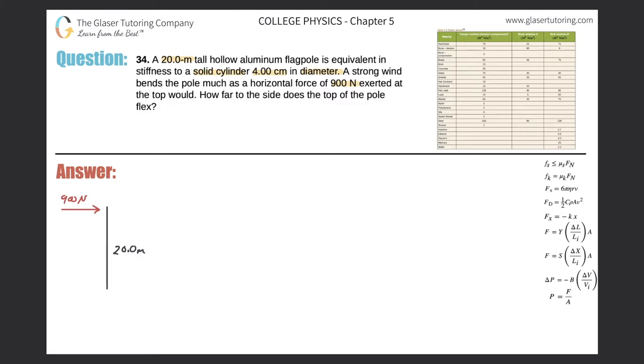So here I have a little picture down here at the bottom. Here's a 900 newton force wind. Here's the 20 meter pole and essentially what's going to happen is this pole is going to bend some amount and this amount right here can be represented as our change in x.